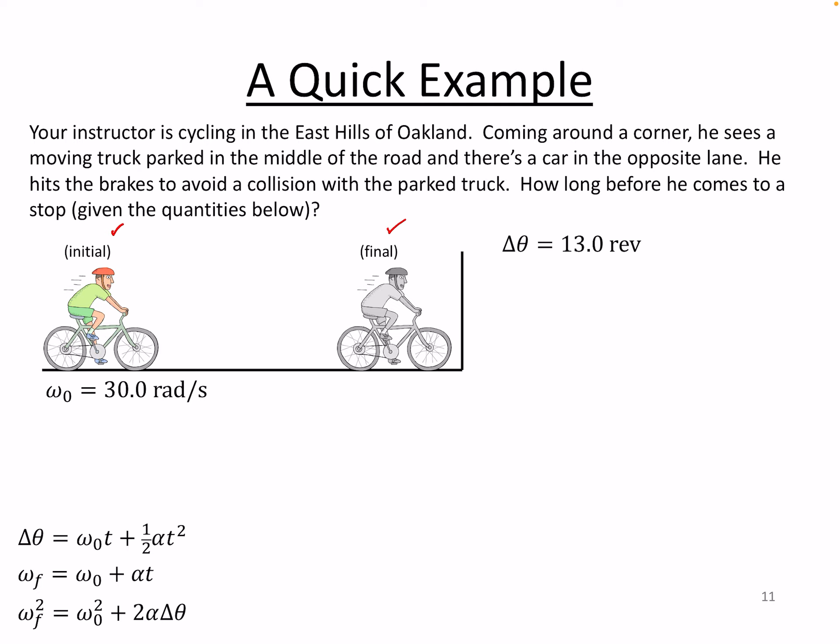So here's the information that we are given. We're told that we have wheels that have an initial angular velocity of 30 radians per second, and we're told that the angular displacement that the wheels go through before I stop is 13 revs.